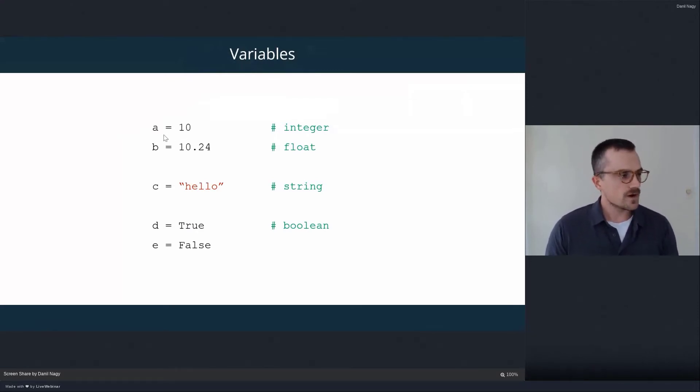So a variable is just a container to store data. And Python supports several different data types. And the most basic four data types that we'll be using are integers and floats. And both of them represent numbers, but integers represent whole numbers and floats represent decimal point numbers.